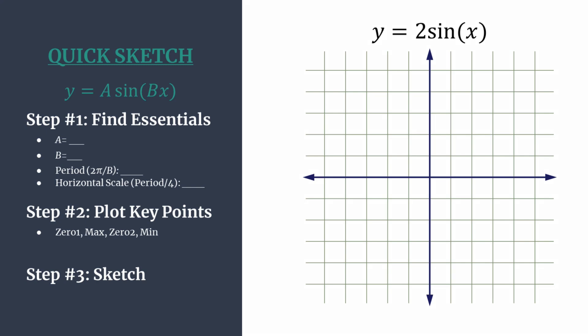Jumping right into step one, we see a is the leading coefficient in our equation. Here that's a two. That's going to help us set the y coordinate for our maximum and minimum key points in step two. That's also known as the amplitude, distance from midline up to max or down to min.